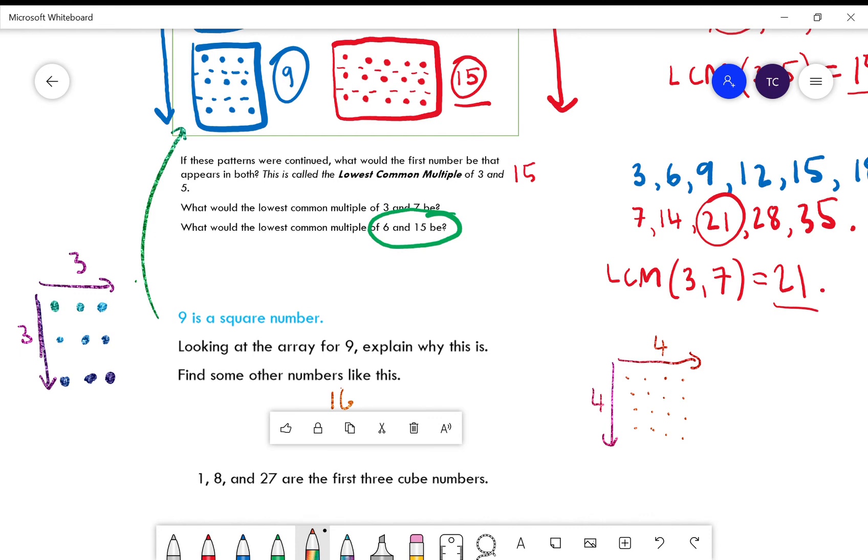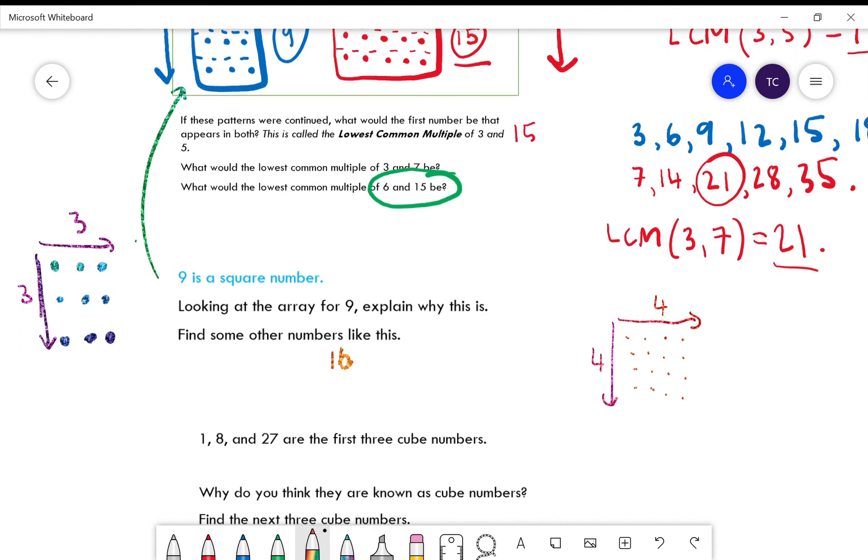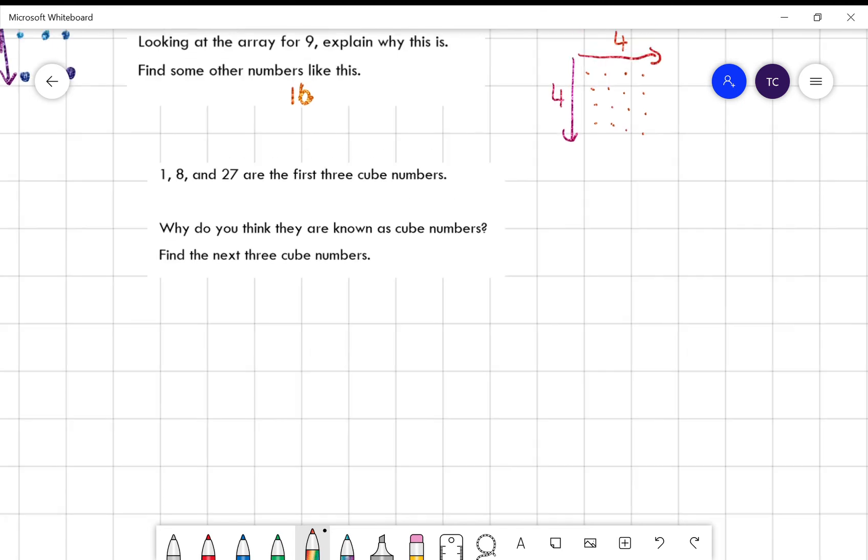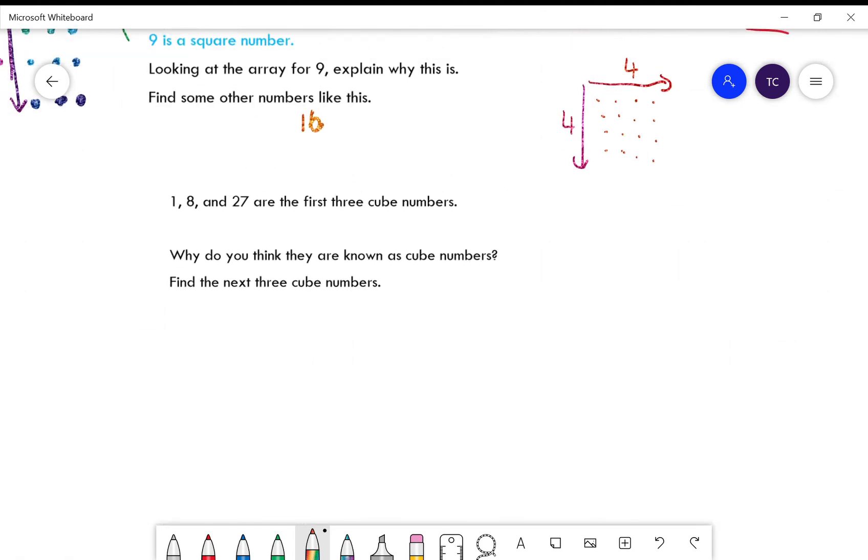Okay, then we've got the cube numbers. So we've got the cube numbers, and it says 1, 8, and 27 are the first three cube numbers.